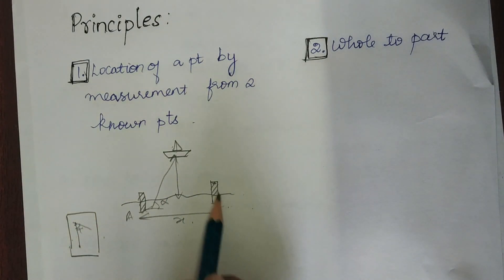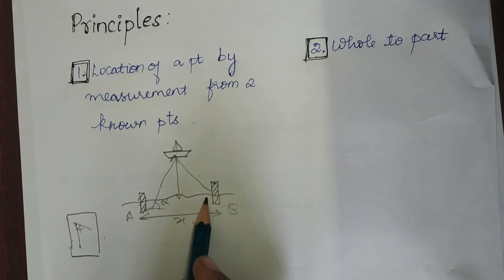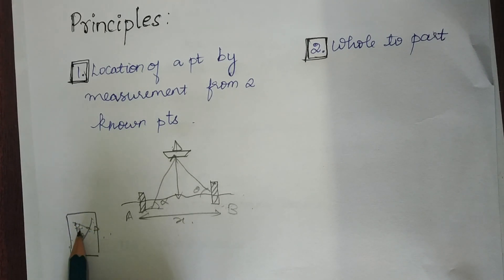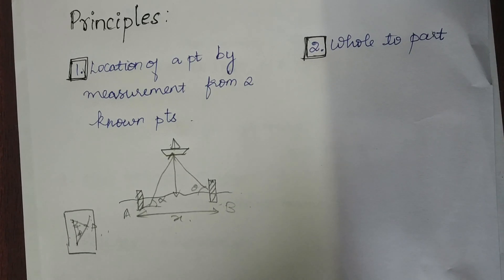From B, you have to find the angle the ship makes - say it is theta - and you mark theta here in the paper. As a result, you will get the point of the ship, and using normal trigonometry you can find the distance of the ship from the shore.